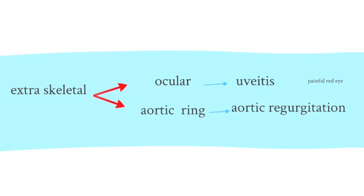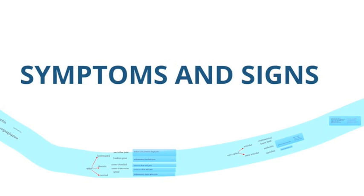The ocular involvement is uveitis, an anterior uveitis usually presenting as a painful red eye, and this can precede the onset of skeletal disease. Aortic ring involvement results in aortic regurgitation and is a late feature in patients with ankylosing spondylitis.